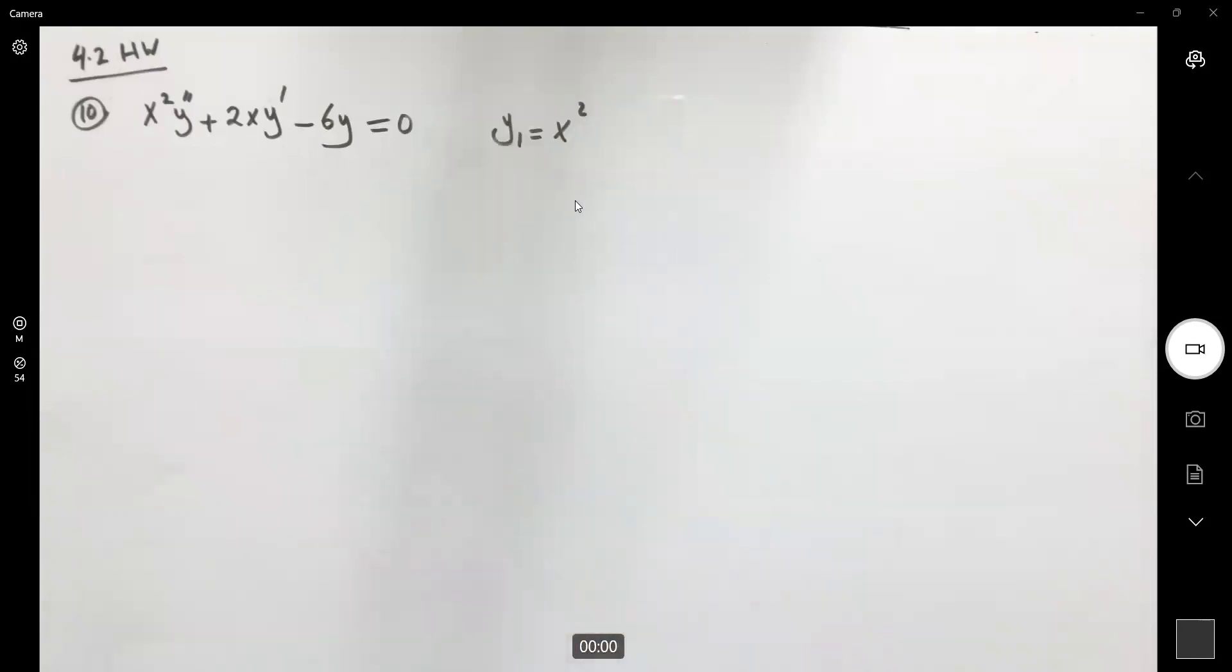So first of all, what we can do, we can divide everything by x squared. Divide by x squared. And note that x cannot be equal to zero.